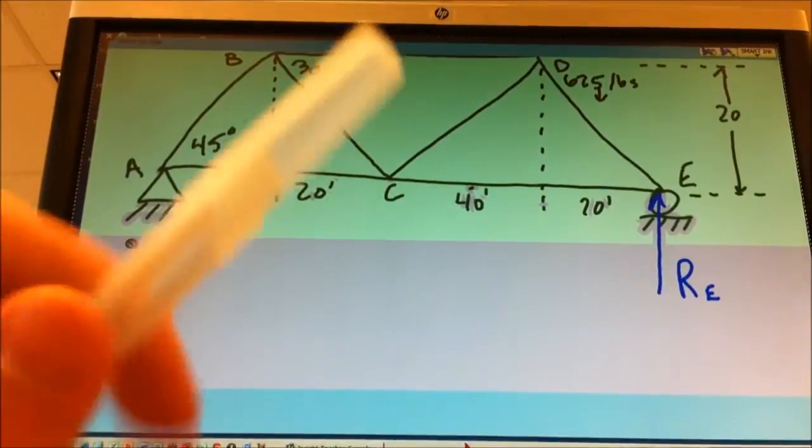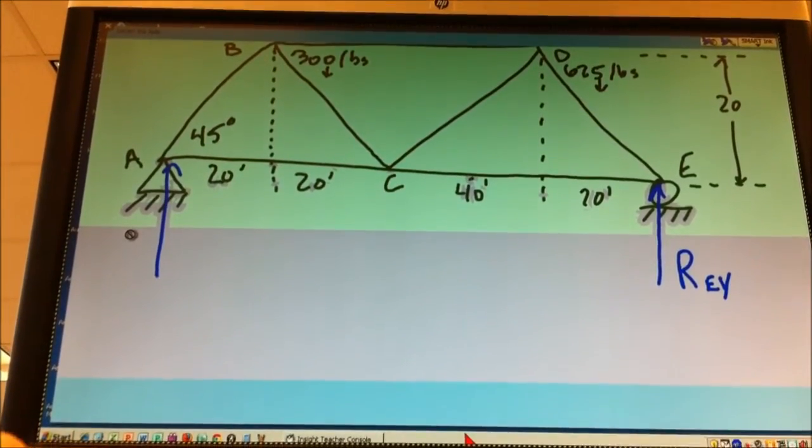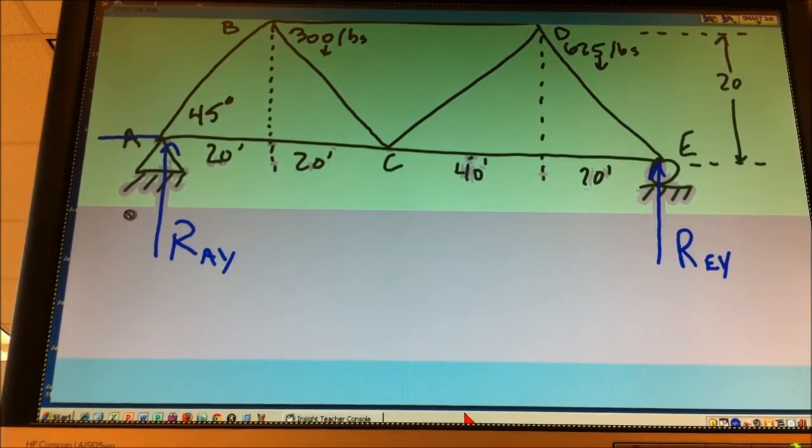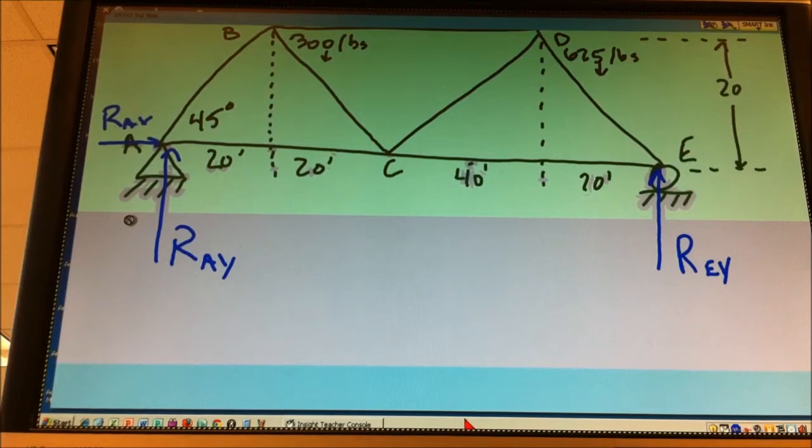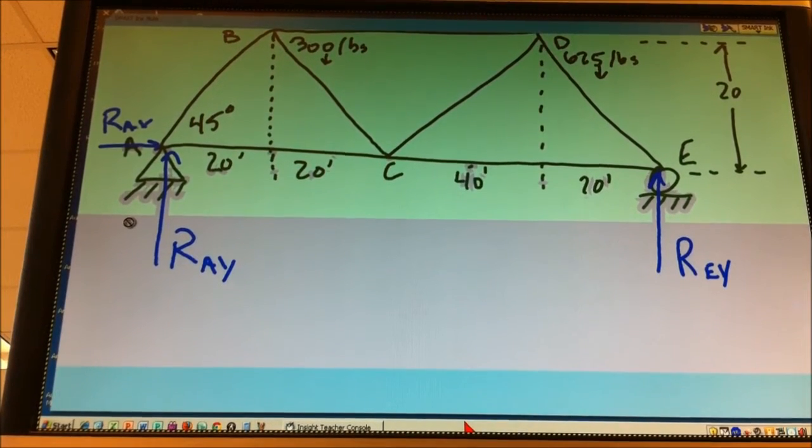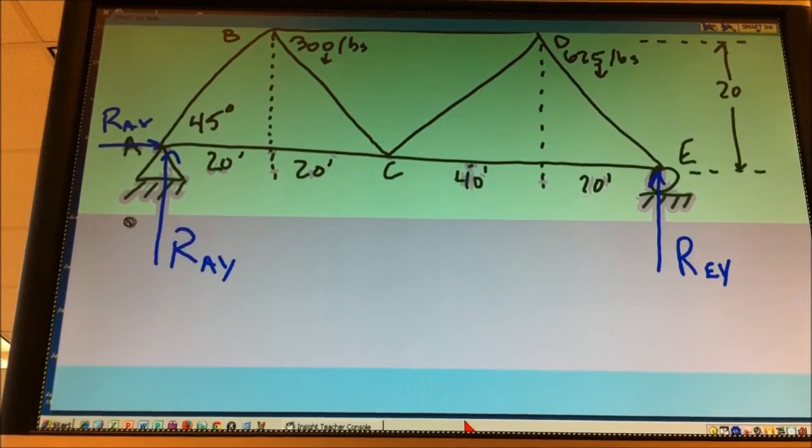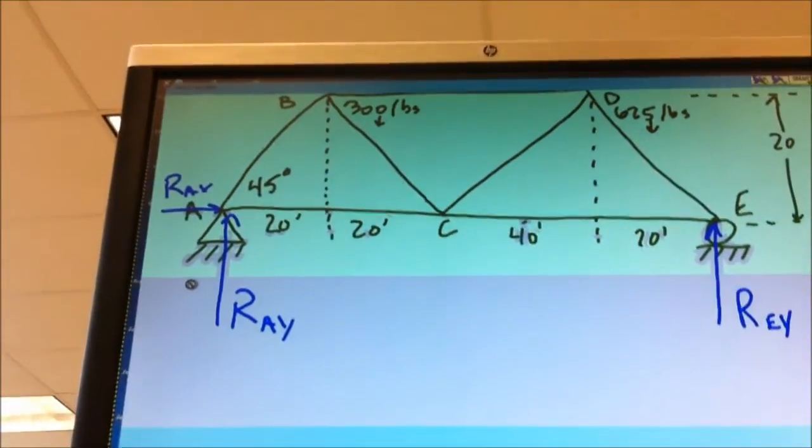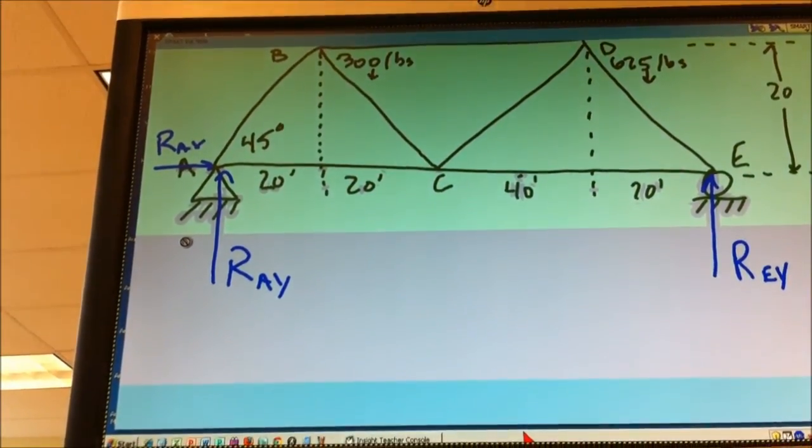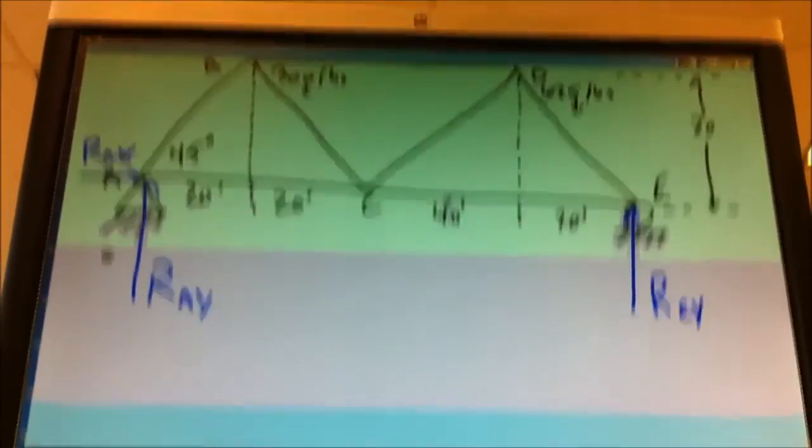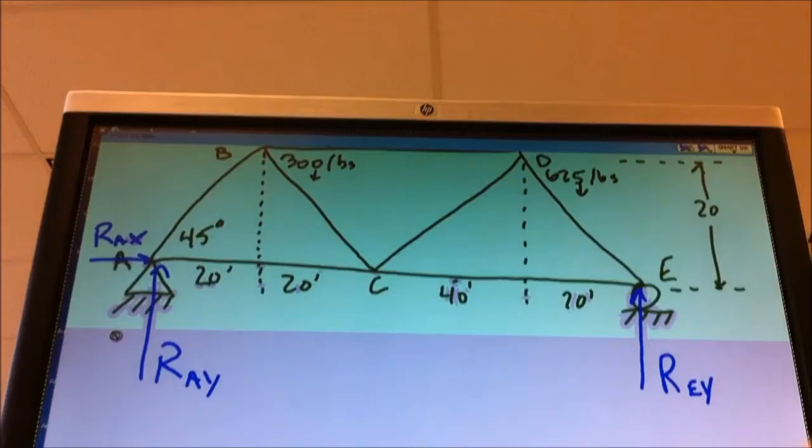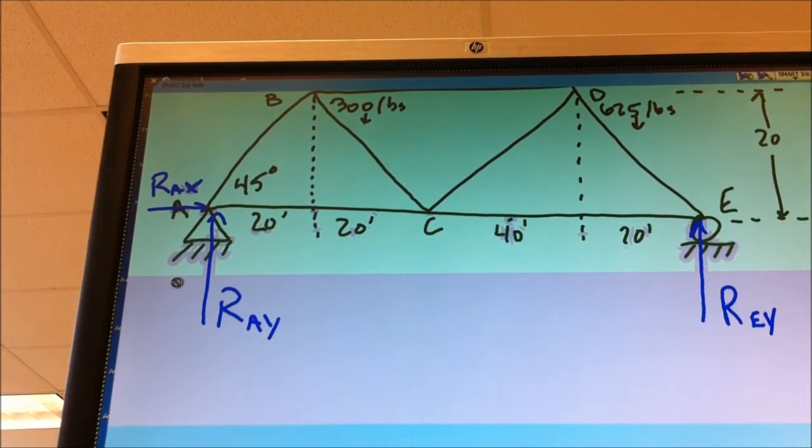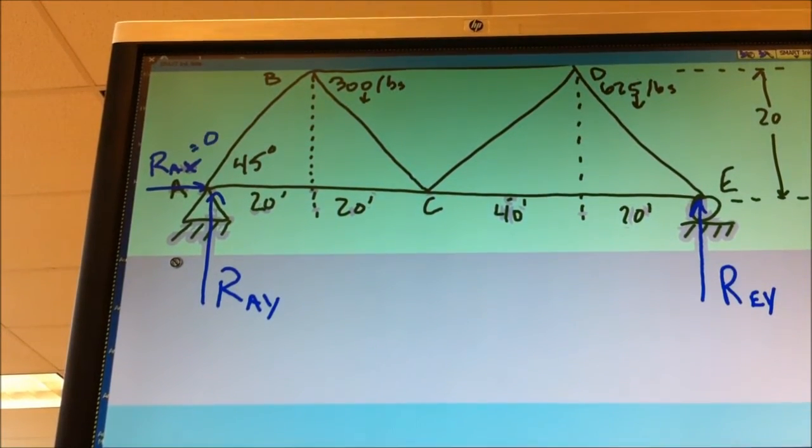We're going to have how many forces? Two. Okay, so we've got a reactionary R_AY, we've got a reactionary R_AX. Right off the bat, we know what the reactionary force, the AX, is. Zero. Because we don't have any forces that are perpendicular distances in the same direction. So right off the bat, we know R_AX is equal to zero. That's fine, we're done with that one.